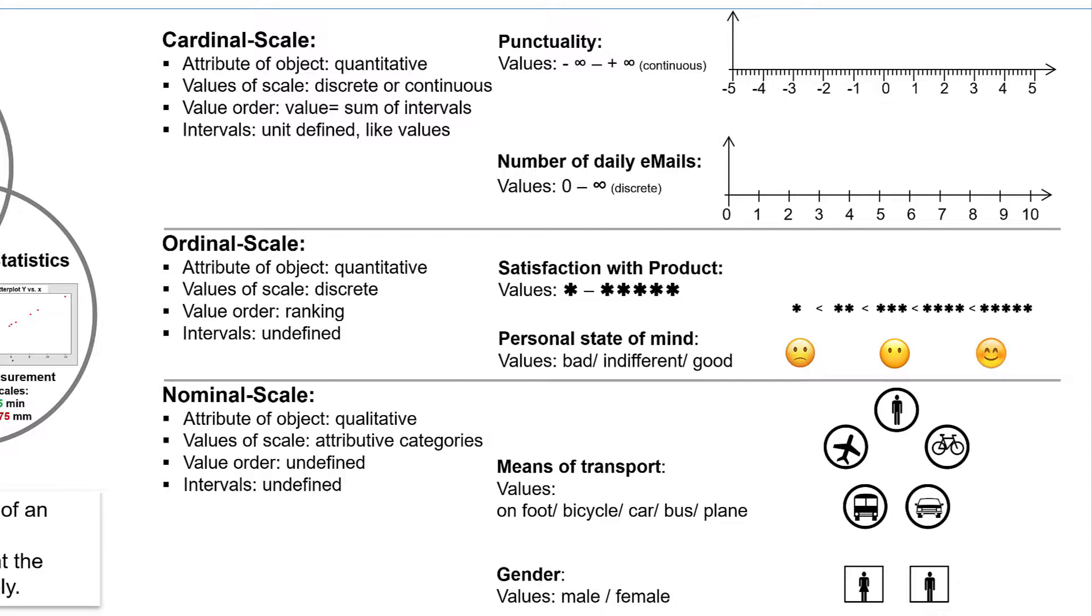These attributes of the scales determine the degree of information they can carry. Due to the increasing level of the attributes, the degree of discrimination between the values of the scale increases and thus the amount of information. This means that the values of a sample, and thus the underlying attribute, can be better discriminated from level to level.